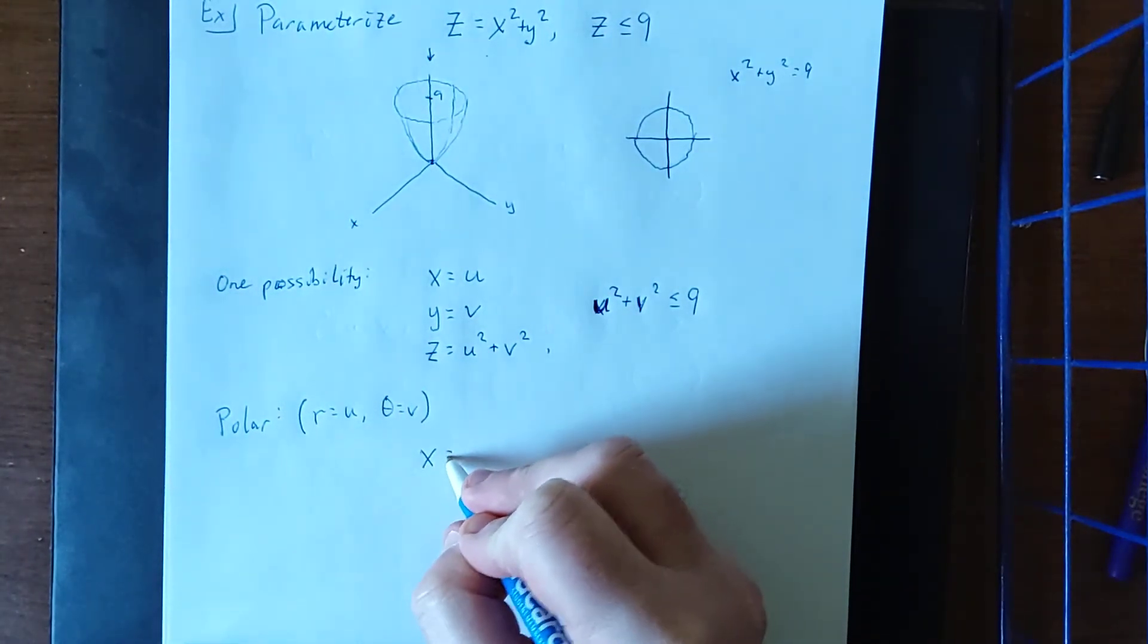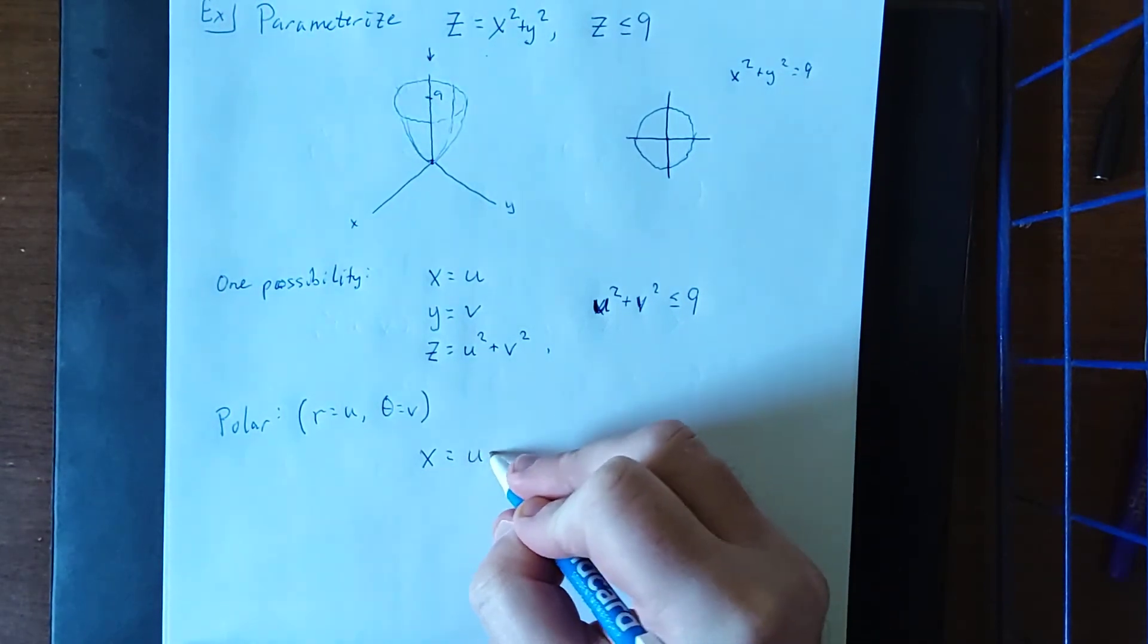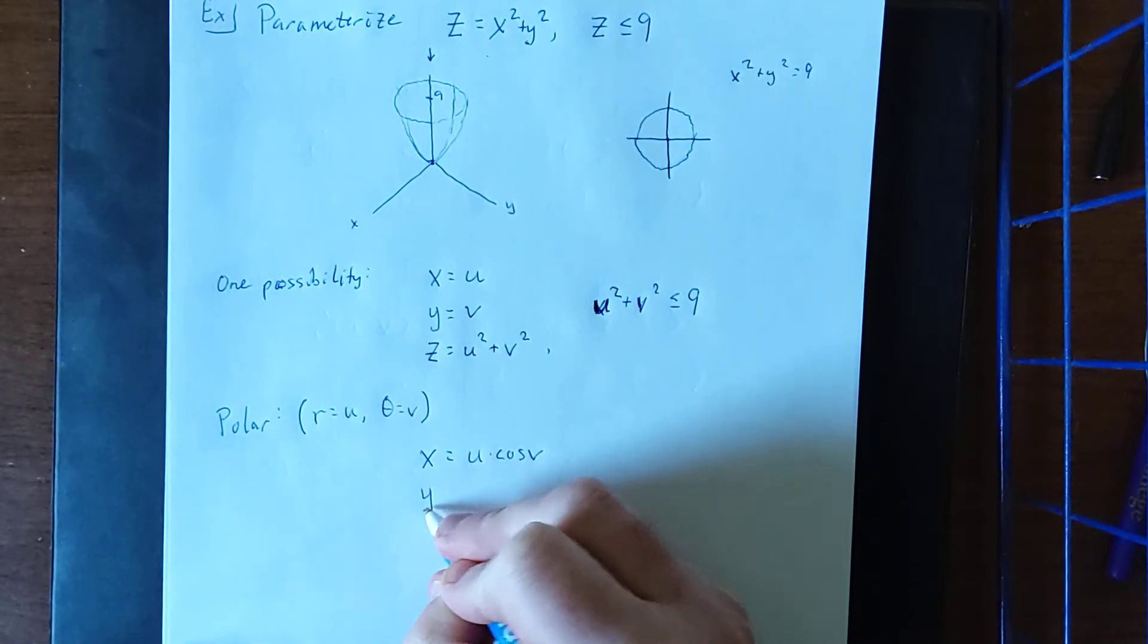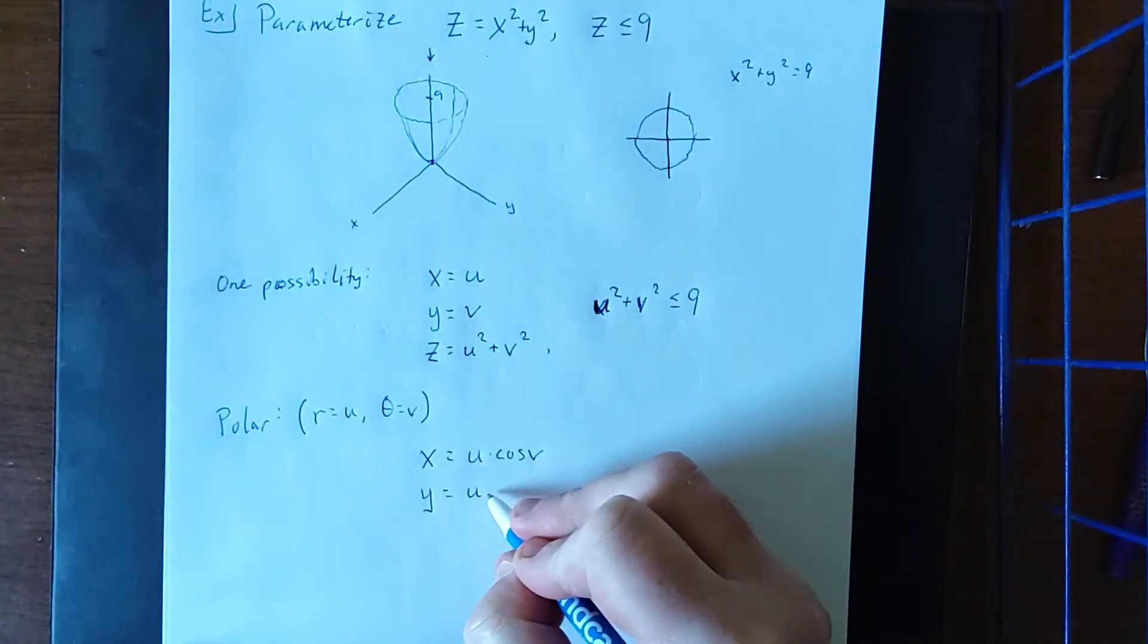So when I convert to polar, normally what we would see is x equals r times the cosine of theta. That's going to be u times the cosine of v. Y, normally I would see r times the sine of theta. Here I'm going to say u times the sine of v.